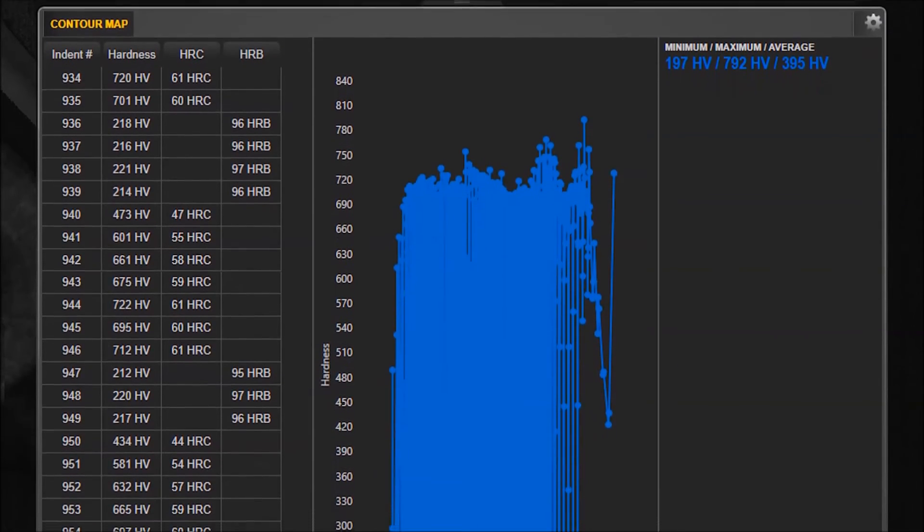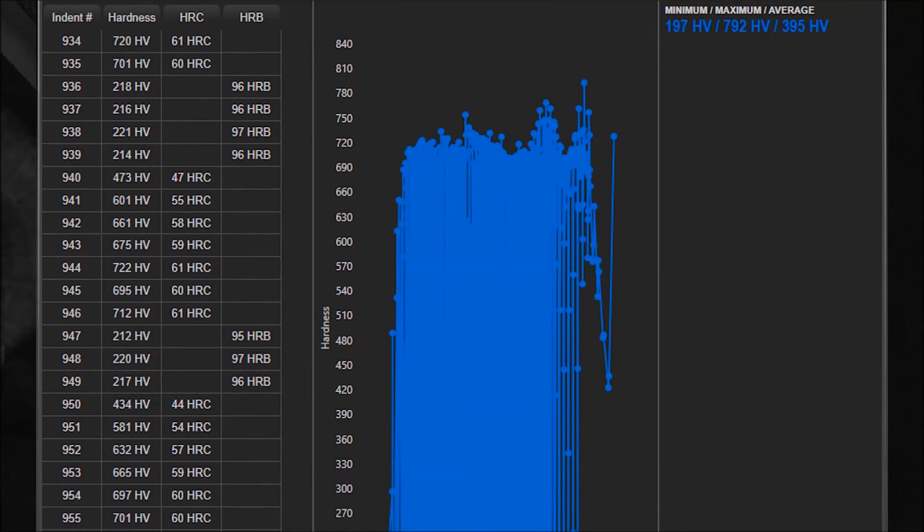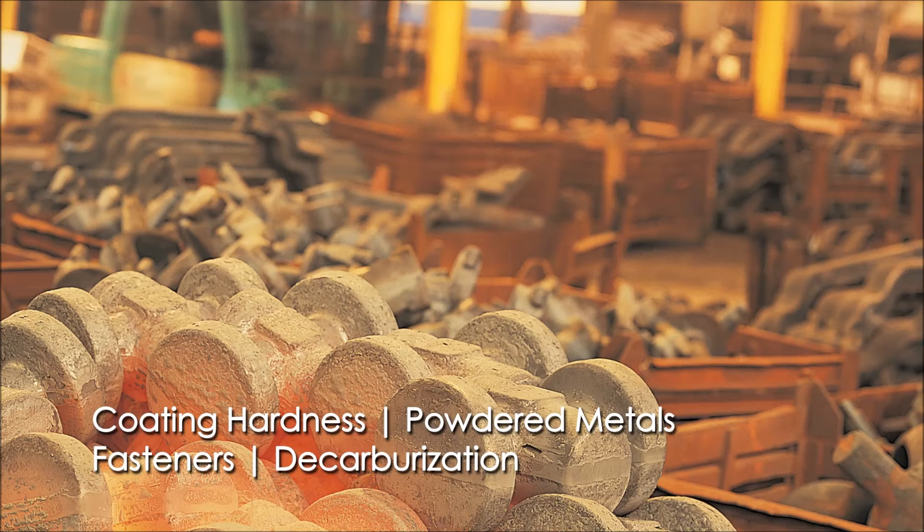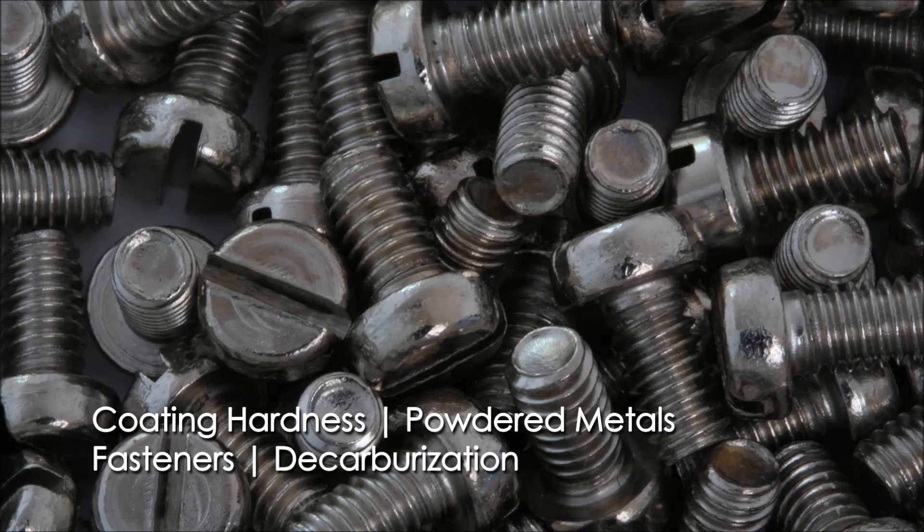This gives you the ideal tool for weld analysis. In addition to case depth analysis and color hardness mapping, the AMH-55 hardness testing system is ideal for coating hardness, powdered metals, fasteners, decarburization, and so much more.